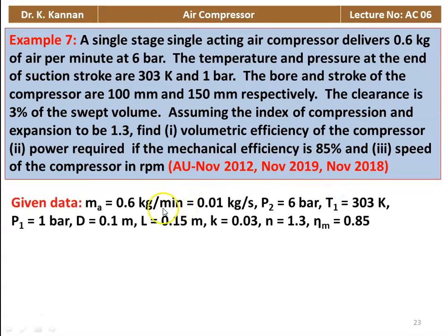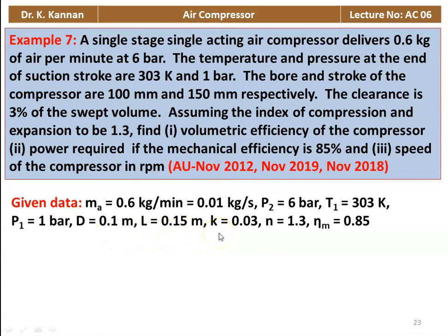We write down the given data: actual mass of air 0.6 kg per minute, which is 0.01 kg per second; delivery pressure P2 equal to 6 bar; temperature T1 equal to 303 kelvin; suction pressure P1 equal to 1 bar; diameter equal to 0.1 meter; stroke length equal to 0.15 meter; clearance ratio equal to 0.03; n equal to 1.3; and mechanical efficiency is 0.85.